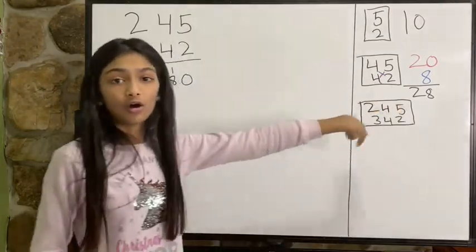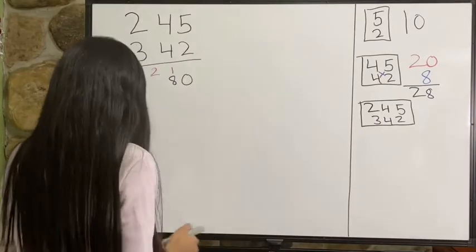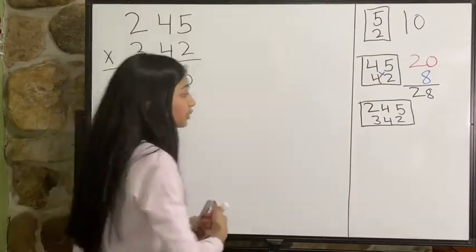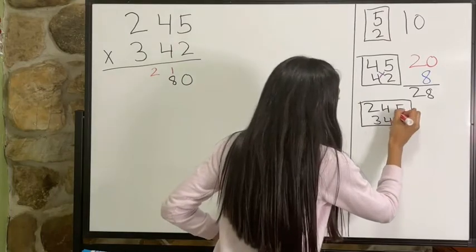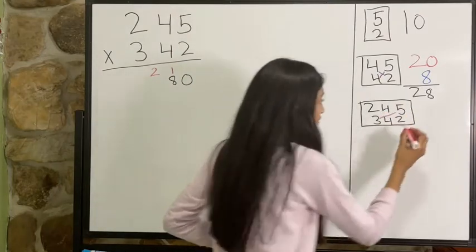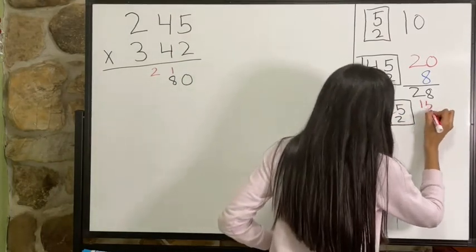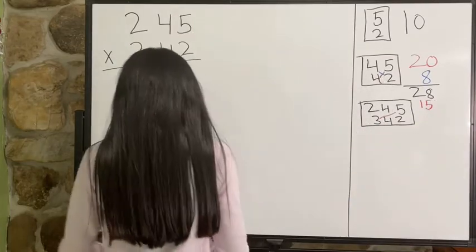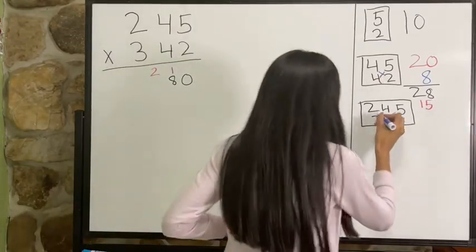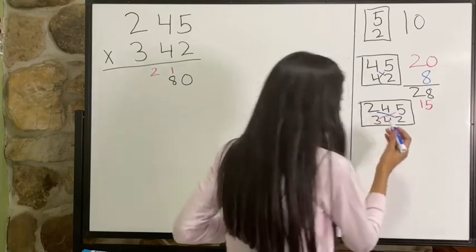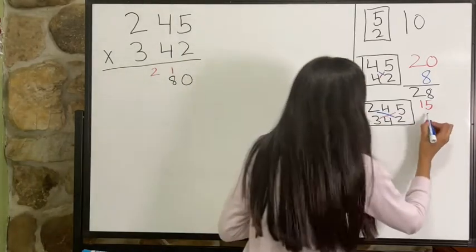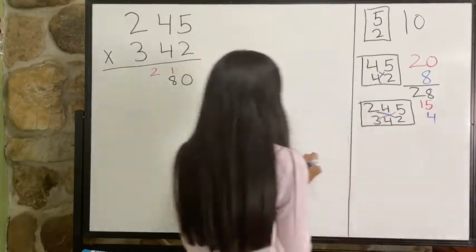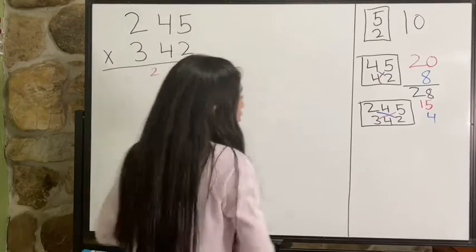So first I'm going to multiply five times three which is 15, and then I'm going to multiply two times two which is four.